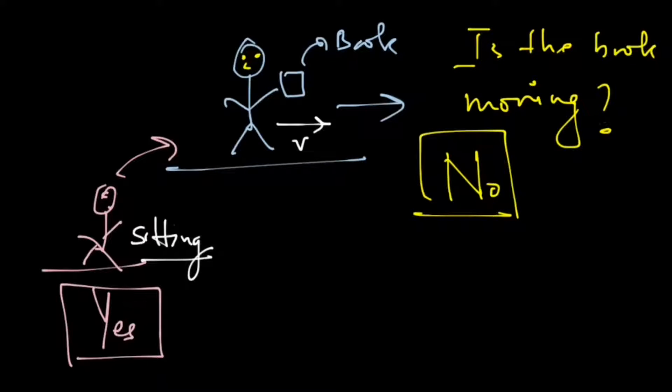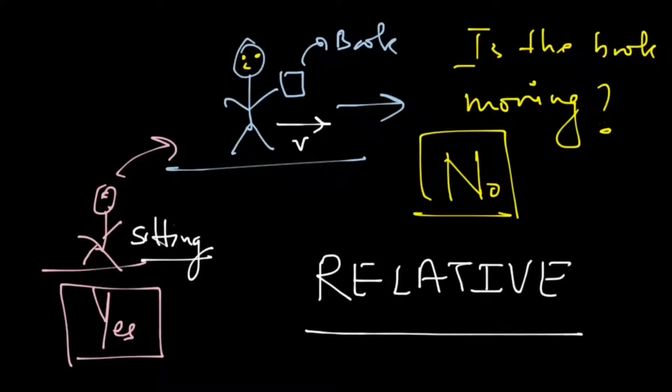So the point to take from here is that motion is always relative. That is, we will always need an observer. Now for us, the observer always sits at a very convenient place and we call that place origin.